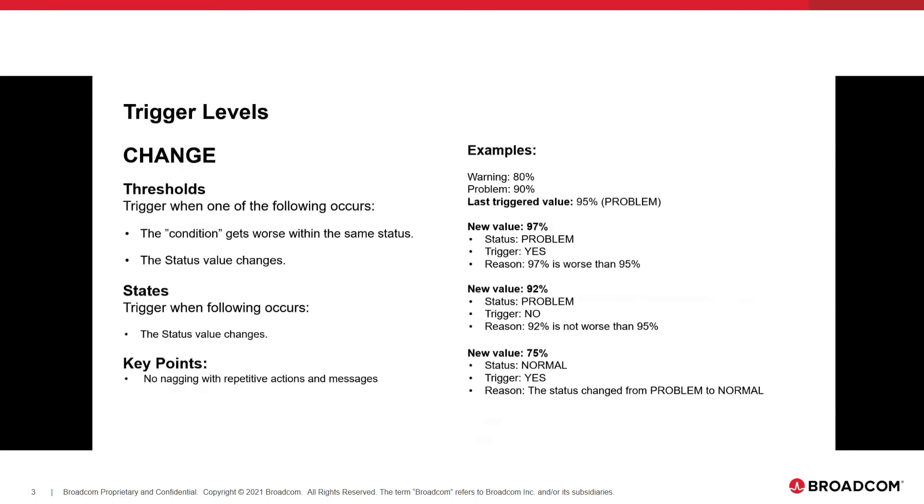The first part of this is if the condition gets worse within the same status. If you currently have a status of warning or problem, and essentially the number gets higher, if you've already been notified and the number gets higher, we'll notify you again. The second bullet there is the status value changes. Anytime the evaluation changes the status from, say, normal to warning, warning to problem, problem to warning, problem to normal, or if you want to think about it, if the color changes, you would be notified.